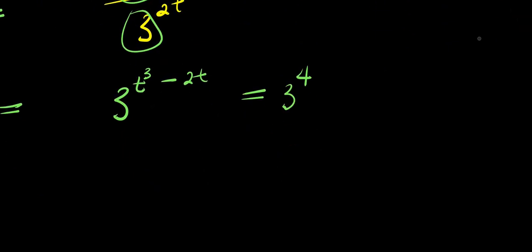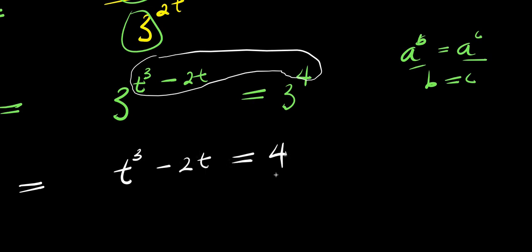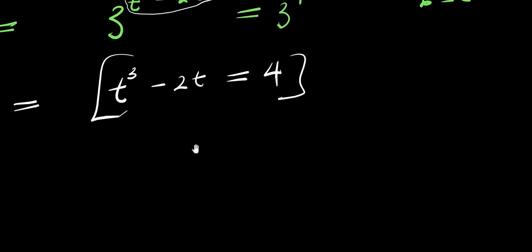Now, if you have a to the power of b equals a to the power of c, that means b equals c — the bases are the same so you compare the exponents. So we are going to equate them and form a cubic equation: t cubed minus 2t equals 4. Moving the 4 over, we have t cubed minus 2t minus 4 equals 0. This is what we are going to solve right now.